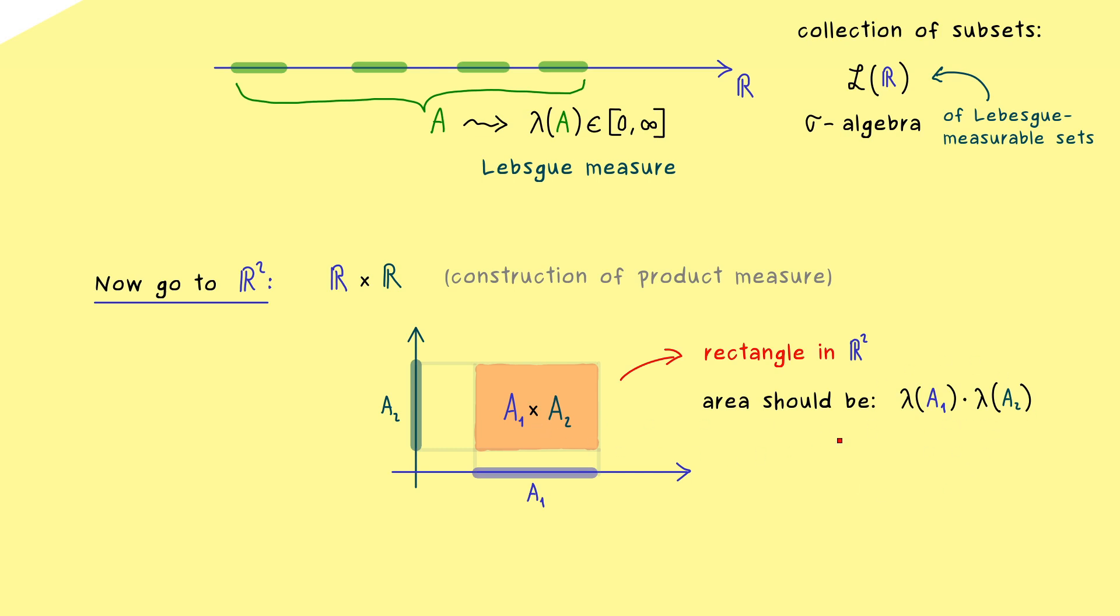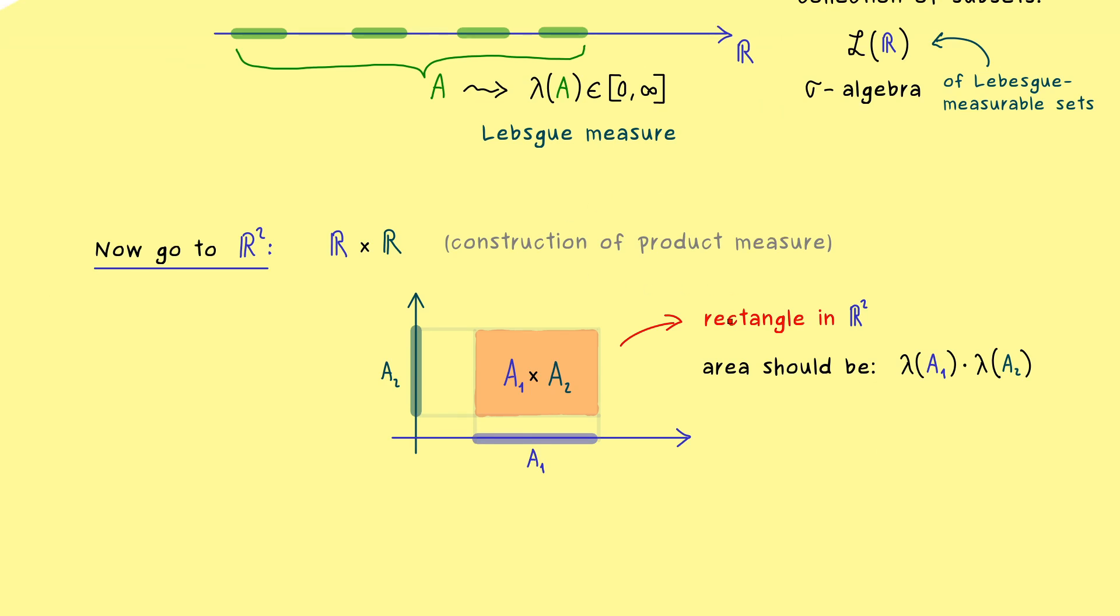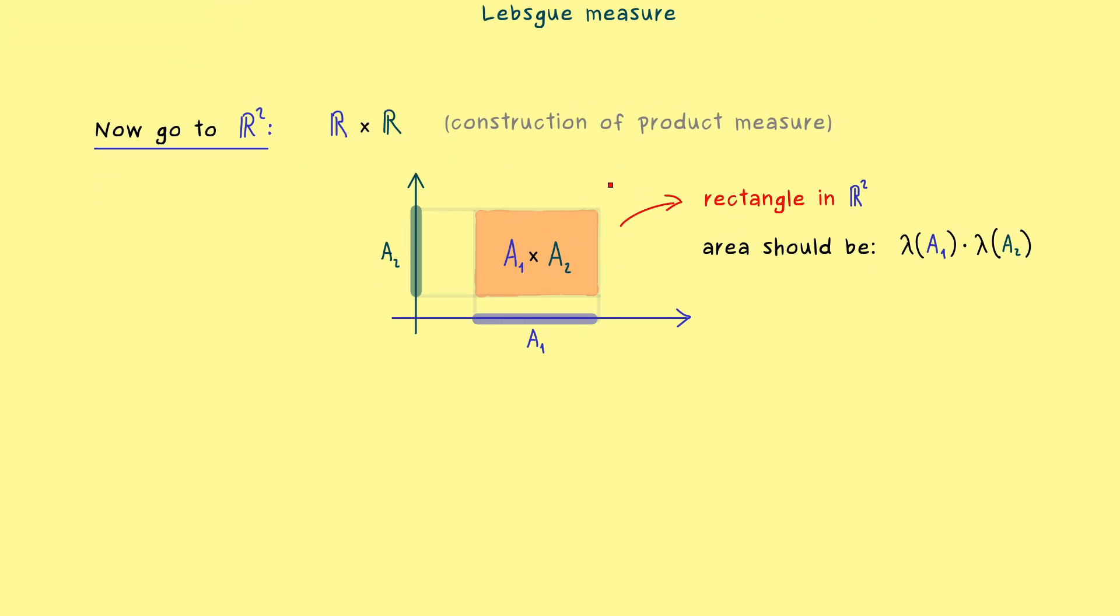And there we can already see the generalization, because this formula here for the area should hold no matter which Lebesgue measurable subsets A1 and A2 we choose. And this is already the whole starting point for the product measure. Just lift everything to Cartesian products.